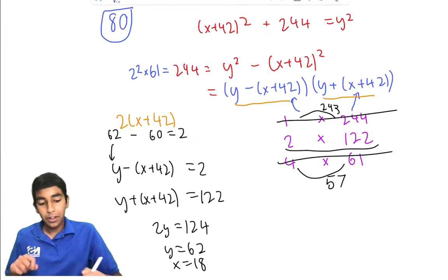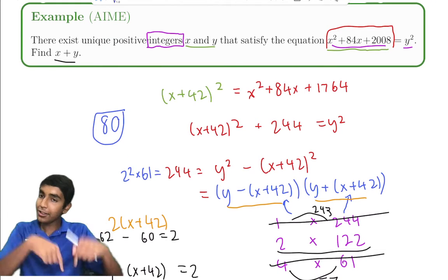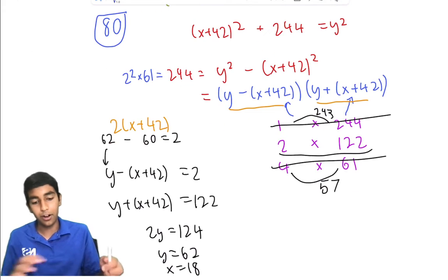So the trick here was we completed the square, used difference of squares, and then we just saw that the parity didn't work.